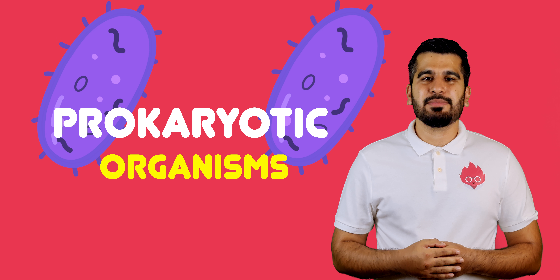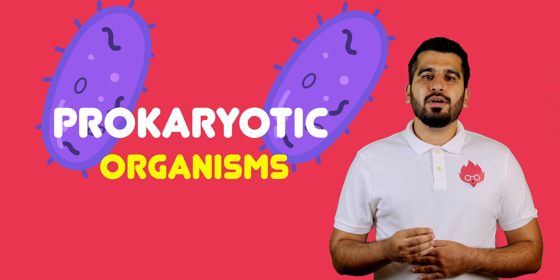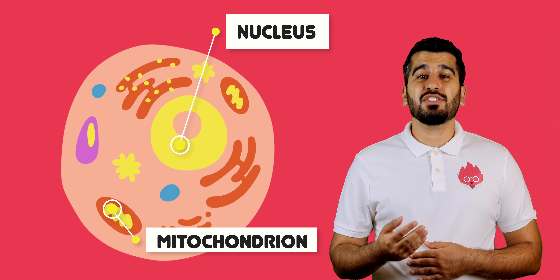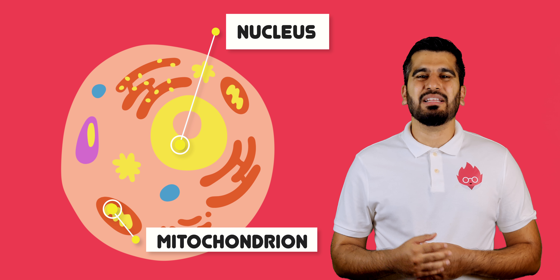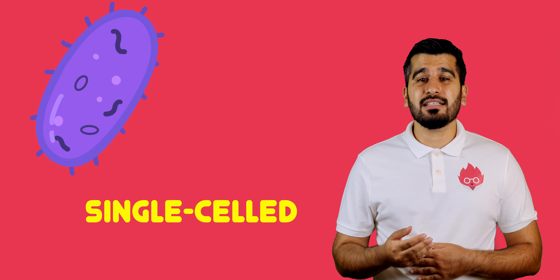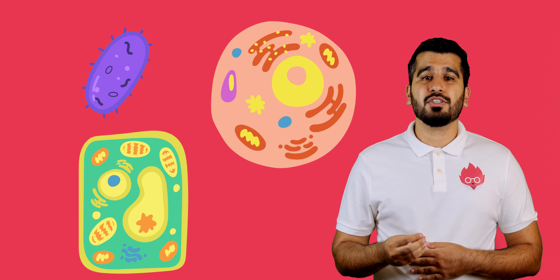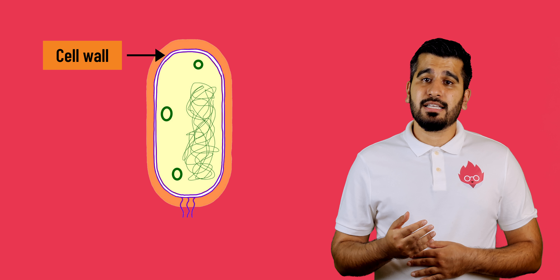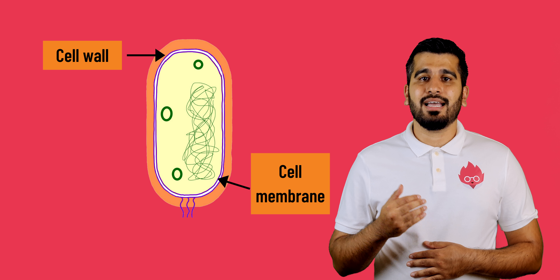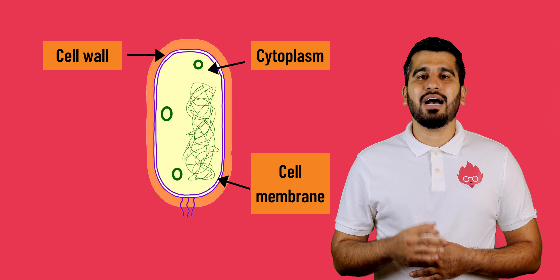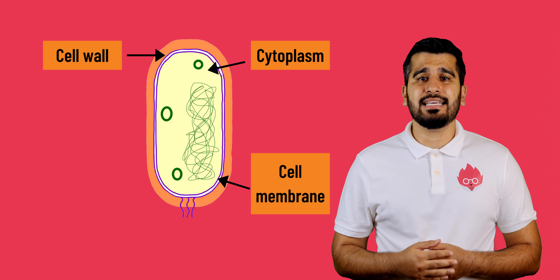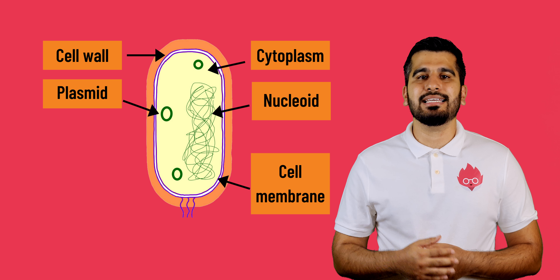Prokaryotic organisms, like bacteria, are organisms which do not have membrane-bound organelles such as the nucleus and the mitochondria. Features of bacteria include that they are single-celled organisms and are much smaller than plant and animal cells. They have a cell wall, a cell membrane and a cytoplasm. They lack a nucleus, but contain circular DNA called plasmids, or a single DNA loop.